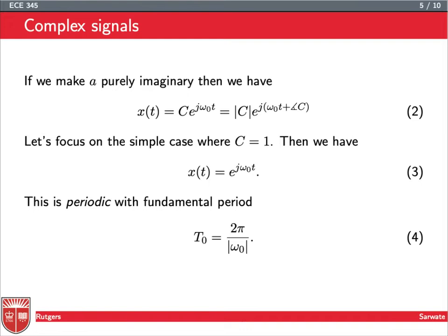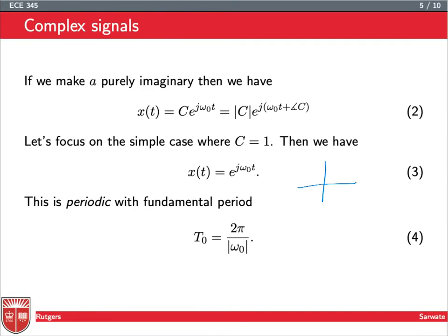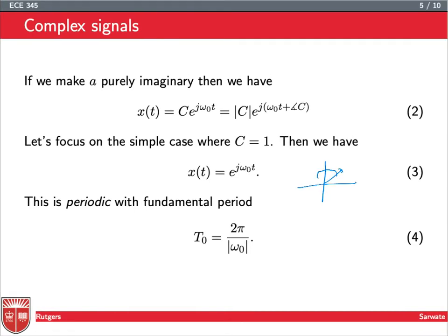And this is a periodic function. It's periodic with period 2 pi over omega naught. So that means after T0, which is 2 pi over omega naught seconds, the signal will repeat itself. And the way to think about this really is that this is a phasor, which is kind of spinning around in the complex plane. So this is the complex plane. This is the real axis, and this is the imaginary axis. All right, so this is a periodic function.